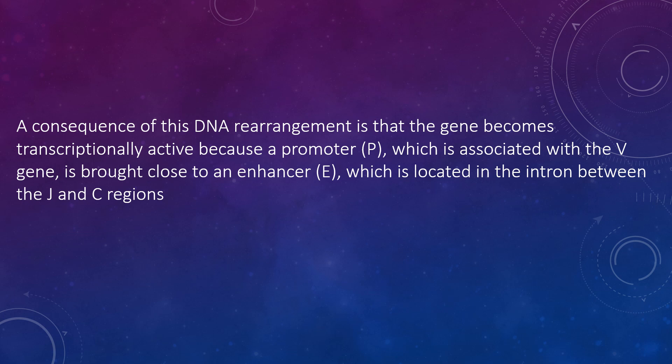A consequence of this DNA rearrangement is that the gene becomes transcriptionally active because a promoter, which is associated with the V-gene, is brought close to the enhancer, which is located in the intron between the J and C regions. As transcription initiates from the promoter, a pre-mRNA is made which contains sequences from the L, V, J, and C regions as well as sequences for the introns between L and V, and J and C. This pre-mRNA is processed or spliced in the nucleus and the remaining introns are removed.